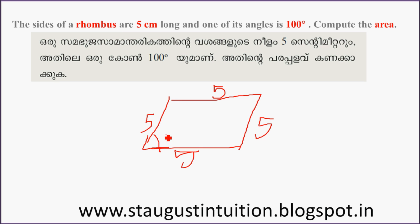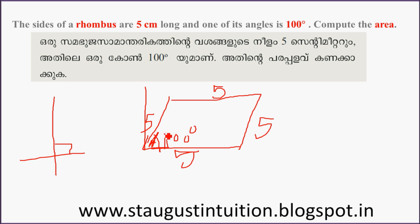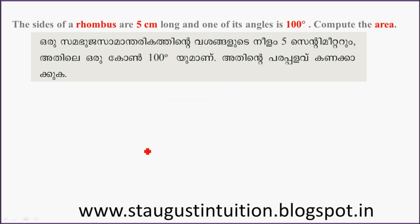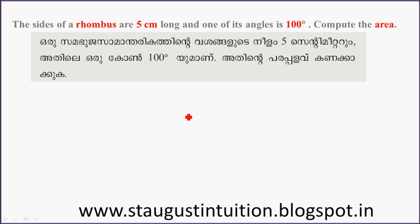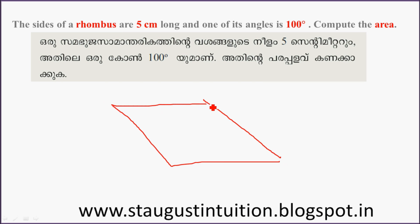One angle is 100 degrees. Since this is a linear pair, the adjacent angle will be 80 degrees — that is, 180 minus 100 equals 80 degrees. And the side is 5 centimeters.